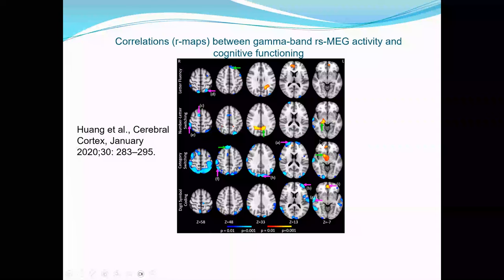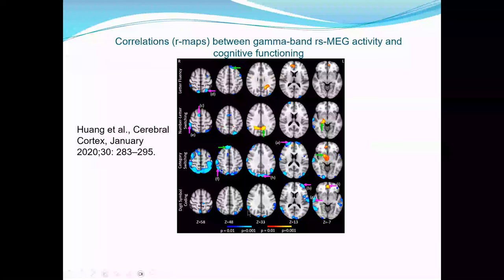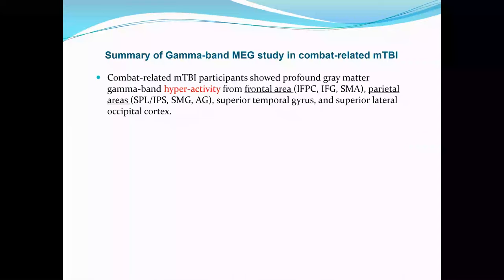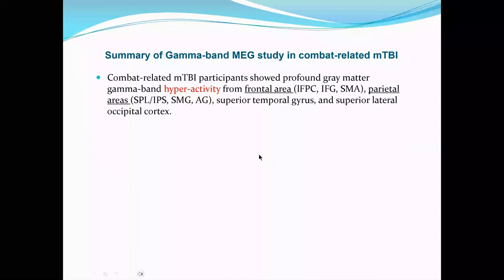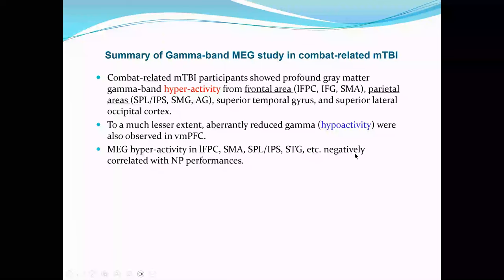We also correlated those areas with abnormal gamma activity with cognitive functioning. The inferior frontal gyri showing increased gamma also shows negative correlation with cognitive functioning — meaning more increase in those regions with high-frequency gamma noise is associated with poorer cognitive performance. In summary: combat-related veterans with mild TBI show hyperactivity in multiple frontal and parietal regions, with hypoactivity in the ventral medial prefrontal cortex, and the MTG hyperactivity negatively correlates with cognitive performance.